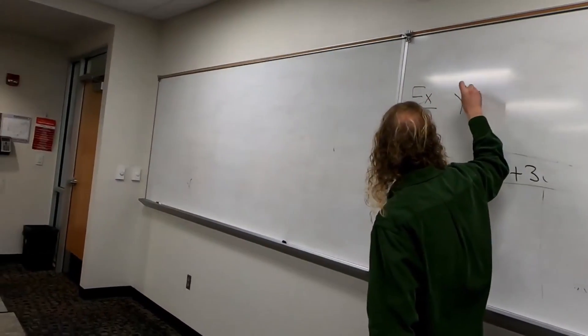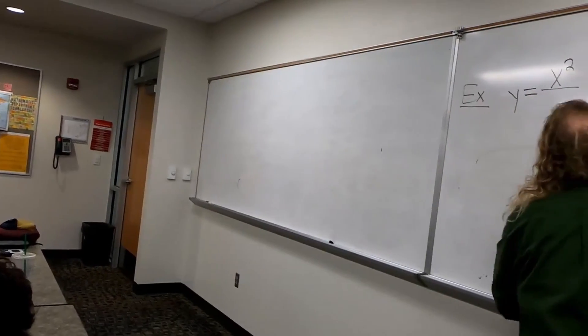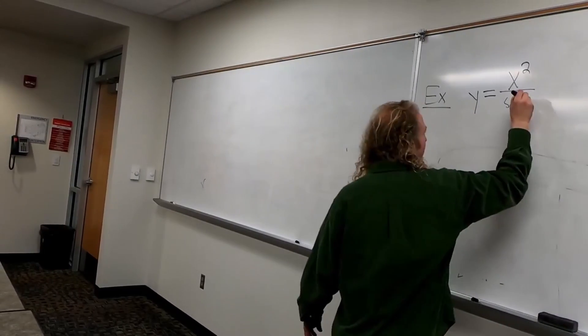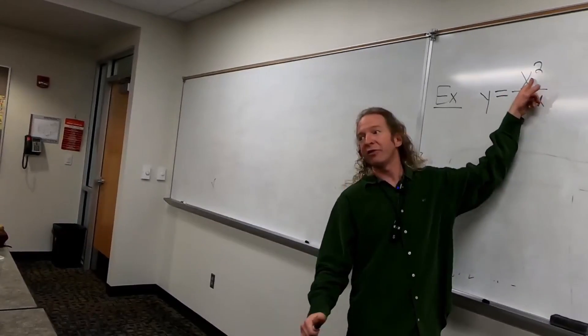I'll try to make it easy. Y equals x squared over secant x. So this one is a fraction, but we don't have a number here.